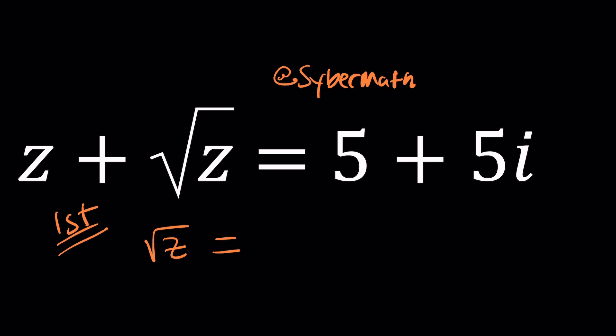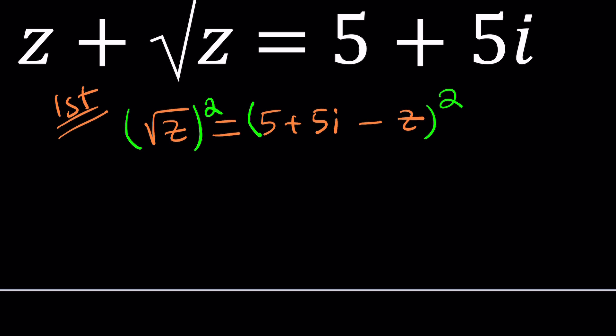Let's go ahead and isolate square root of z. So that's going to give us square root of z equals 5 plus 5i minus z. And now we can square both sides to eliminate the radical because that's our goal. We want to turn this into a polynomial equation because most polynomial equations can be solved, particularly if they are second degree, third, or fourth. Unfortunately, quintic and above cannot be solved. Let me say this one more time. Clearly, there is no quintic formula.